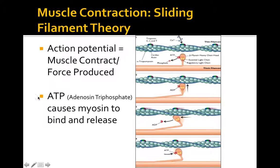Calcium allows the myosin head to bind on the actin. Before that can happen, ATP—adenosine triphosphate—must be present. ATP binds to the myosin globular head, allowing it to come up, grab on, and perform the power stroke. When that occurs, ATP is broken down into ADP as a phosphate is lost. ATP must then return so the cross bridge can detach and repeat the cycle. Both calcium and ATP are necessary for muscle contraction.